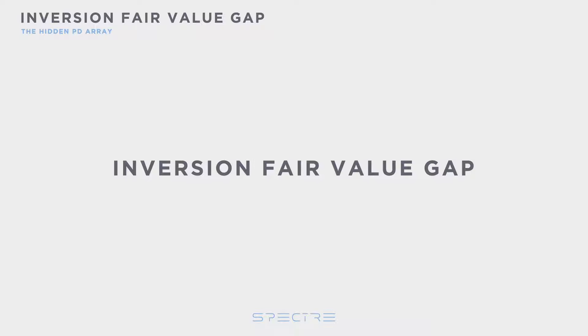This is a hidden PD array — the Inversion Fair Value Gap. In this video, I will show you what it is and how you can utilise it for your narrative as well as entries.